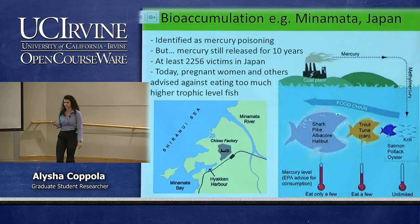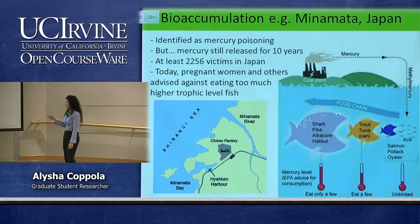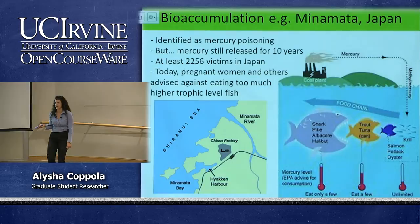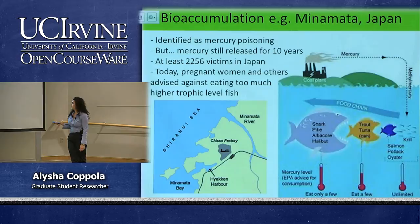Ultimately, fishermen and their families were eating highly toxic fish. That's why I recommend the Monterey Bay Aquarium's Seafood Watch — it's important to check which seafood you're eating and whether it's sustainable. The EPA also advises how much of certain fish to eat. That's why you want to eat lower in the trophic level.